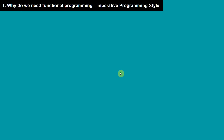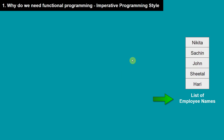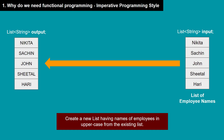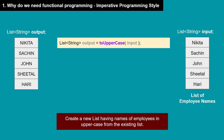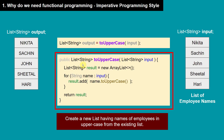Let's say we have a list of employees and let's call it input. Our goal is to create a new list using the existing list but with the names of employees in uppercase, and let's call that list the output list. In Java, we can simply call a toUpperCase method and pass this list into it, and this method will return us the list of employees in uppercase.